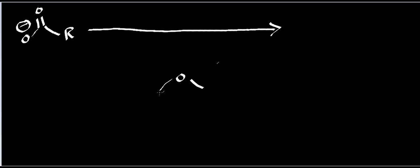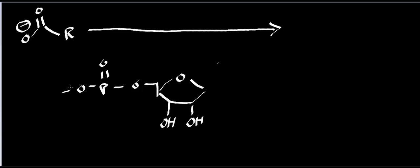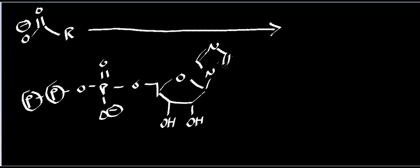I'm drawing ATP with these phosphates — I'm going to abbreviate them and you'll see why in a minute. Up here you have the purine, the adenine. I'll correct a drawing error here. So I've got my ATP and here's what's going to happen.